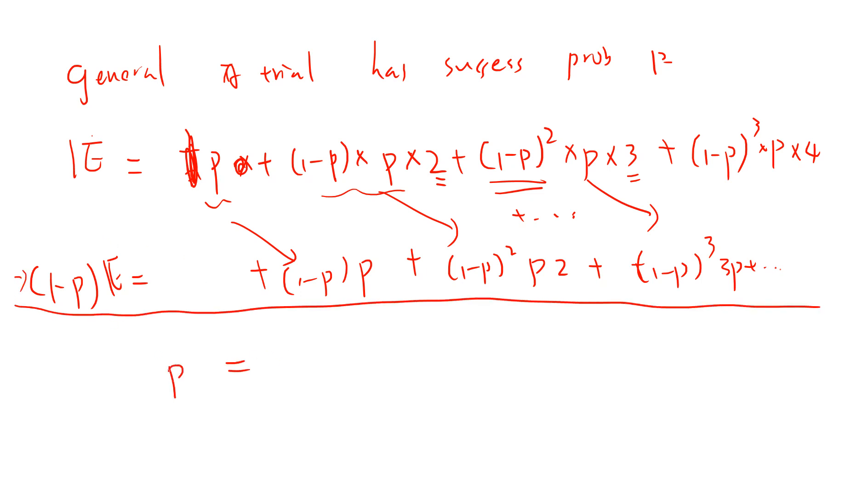The left-hand side is pE, the right-hand side is pE. The second term, I use this term minus this term, so I get p(1-p). I use this term minus this term, I get (1-p)²p, and I get (1-p)³p, and keep going.